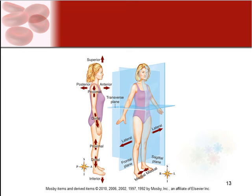Moving away from the ventral cavity, the dorsal cavity is basically your neuro cavity. It's divided into two separate cavities: the cranial cavity, which contains your brain, and the spinal cavity, which runs down the length of your spinal cord.